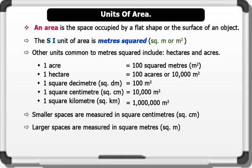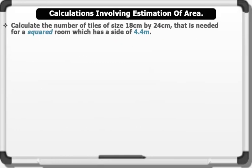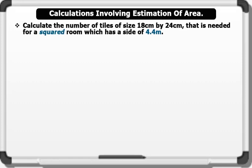Now let's see some calculations involving estimation of area. Calculate the number of tiles of size 18 centimeters by 24 centimeters that are needed for a square room which has a side of 4.4 meters. Solution. Following the general rule of estimation: